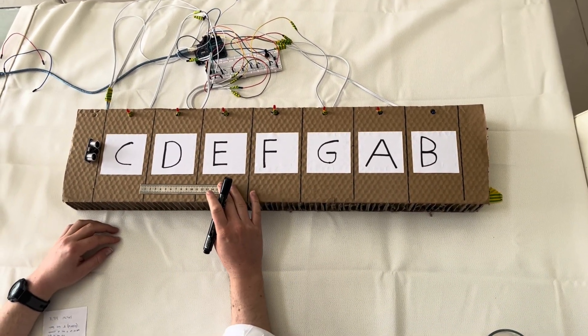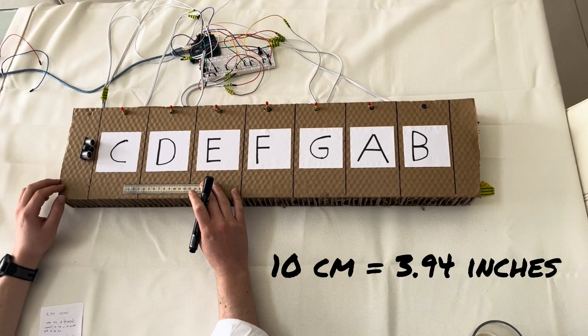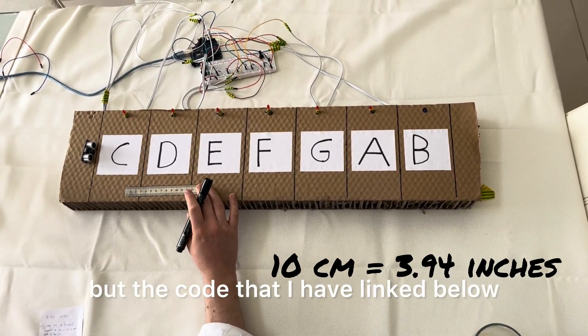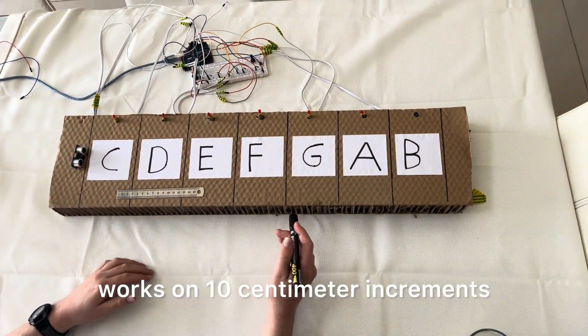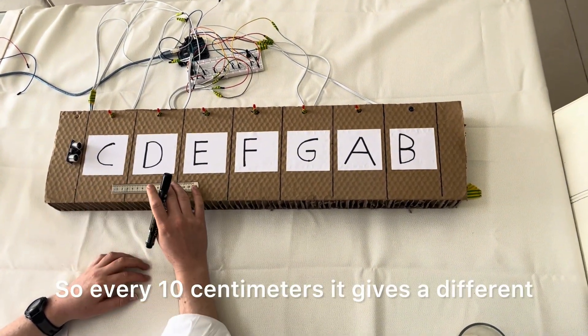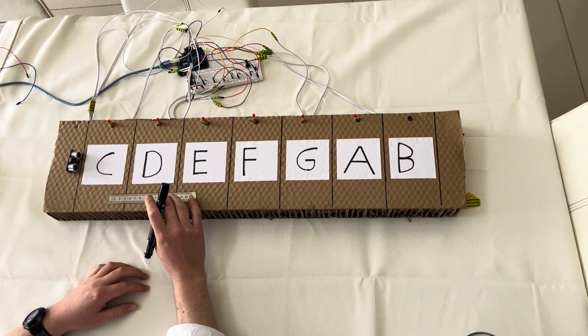Now for our US people, that's 3.94 inches. Now of course you can change that in the code, but the code that I have linked below works on 10 centimeter increments. So every 10 centimeters, it gives a different note.